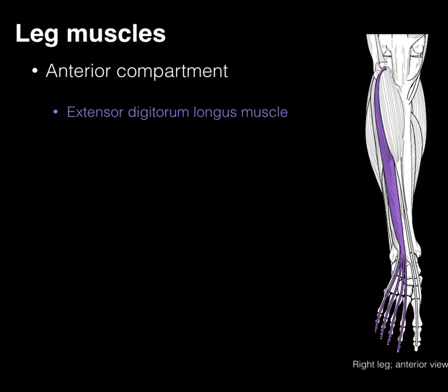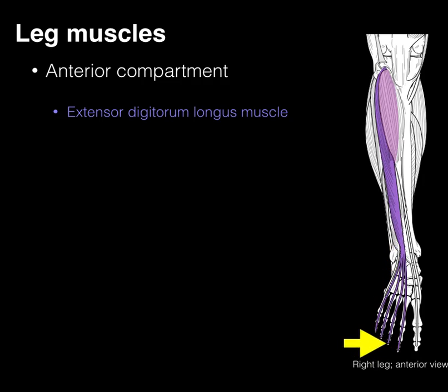Our extensor digitorum longus is going to originate from the tibia, fibula, and the interosseous membrane, and it courses down in front of that tibiotalar joint, where it assists in dorsiflexion, and then it continues all the way down to digits two through five, also known as your lesser toes. Digit two is beside the great toe, and digit five is that little baby toe, and it extends these digits by lifting them off the ground.